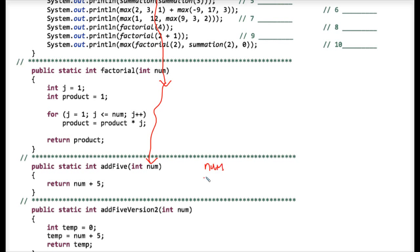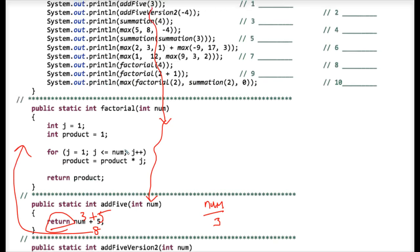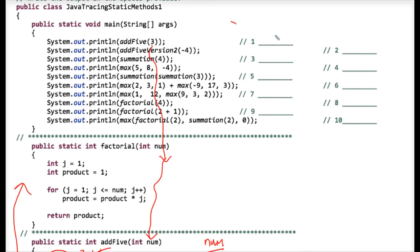So num, you might want to keep track of num here. It's three. And three plus five is eight. And eight gets returned because of the use of the word return. And it plugs in here for our answer to number one, eight.